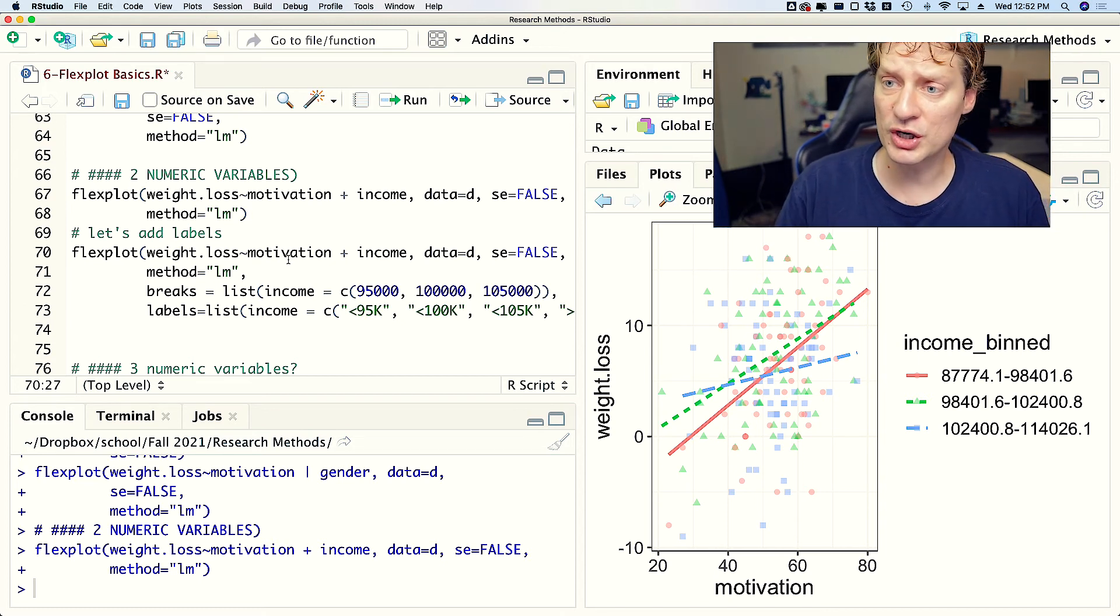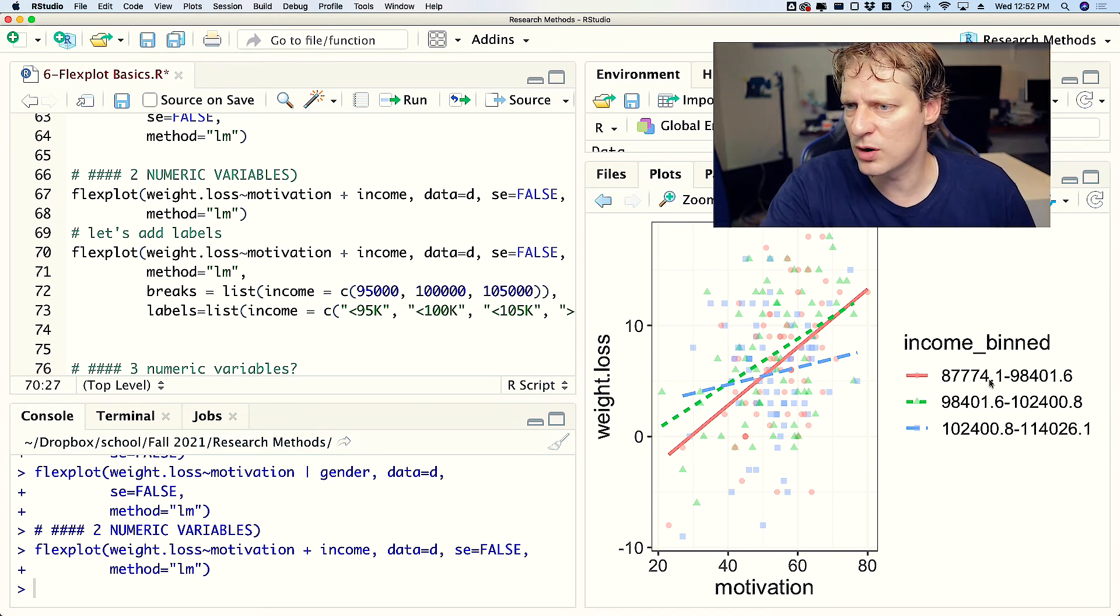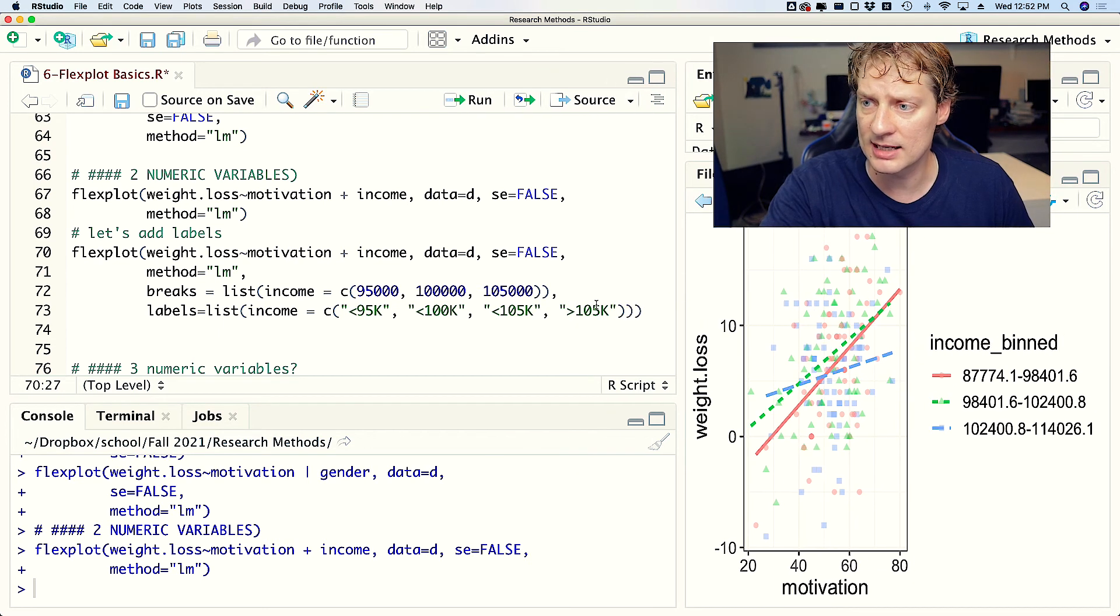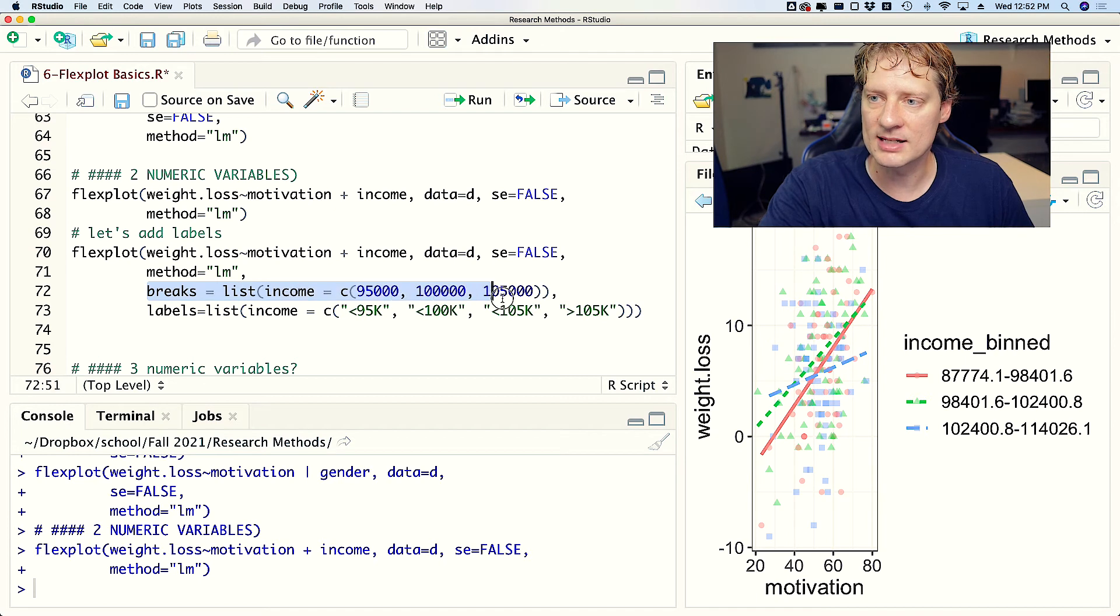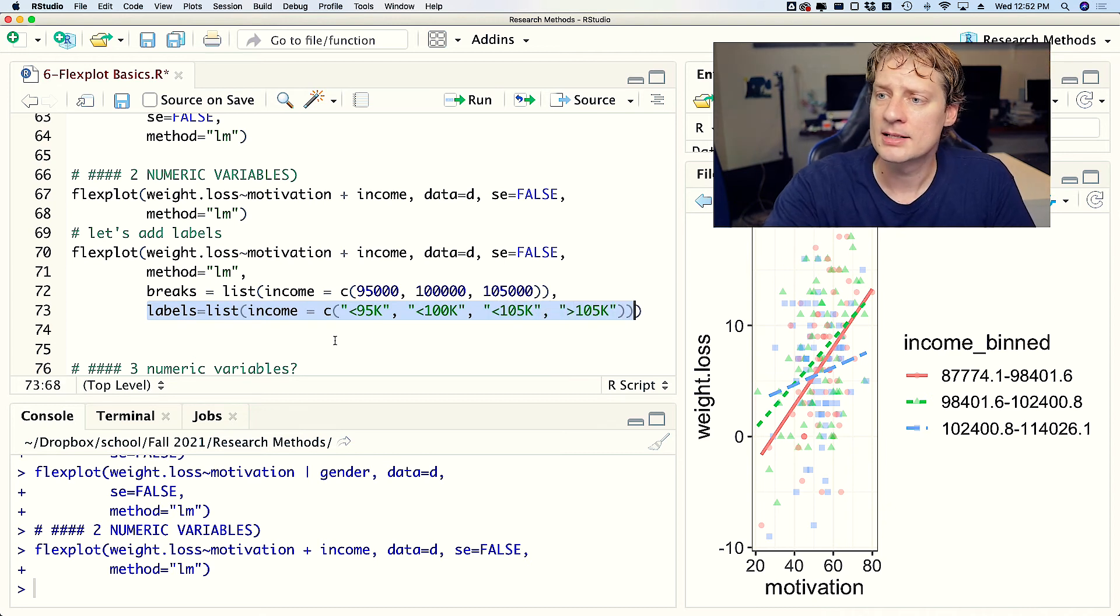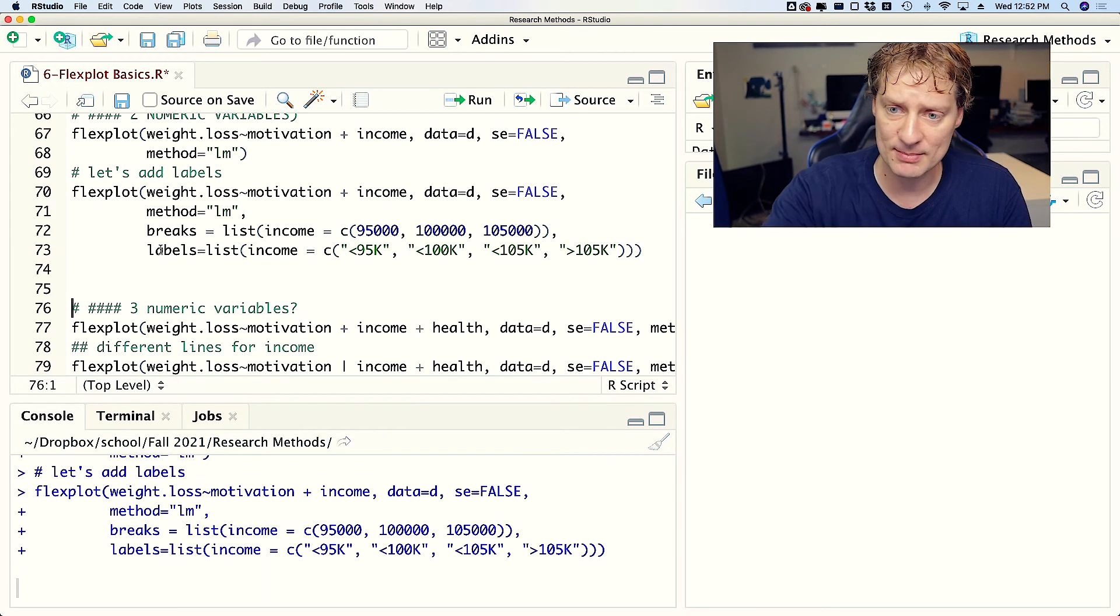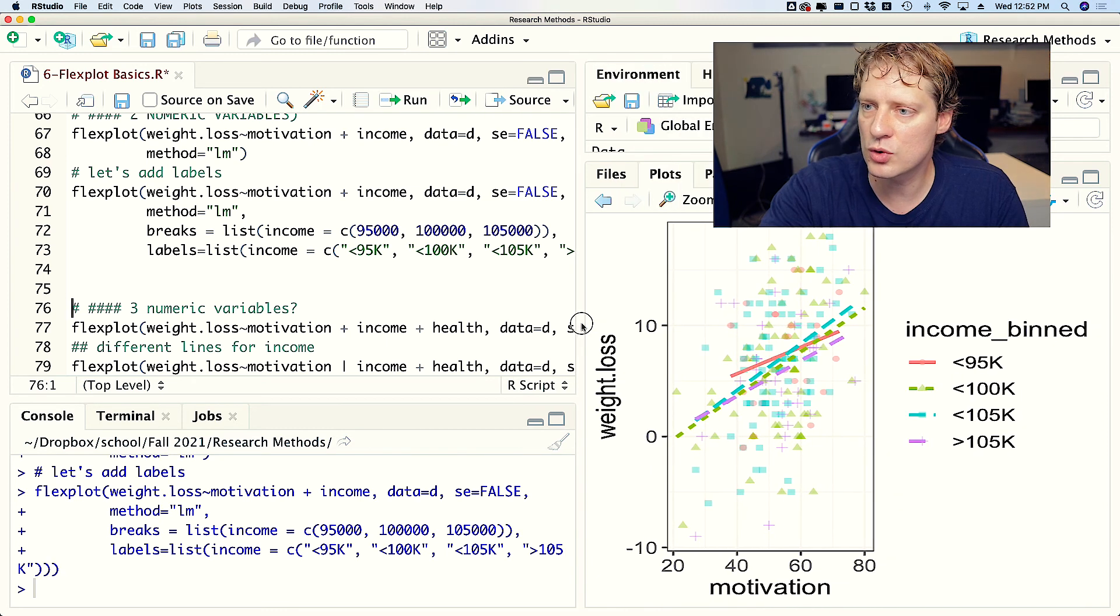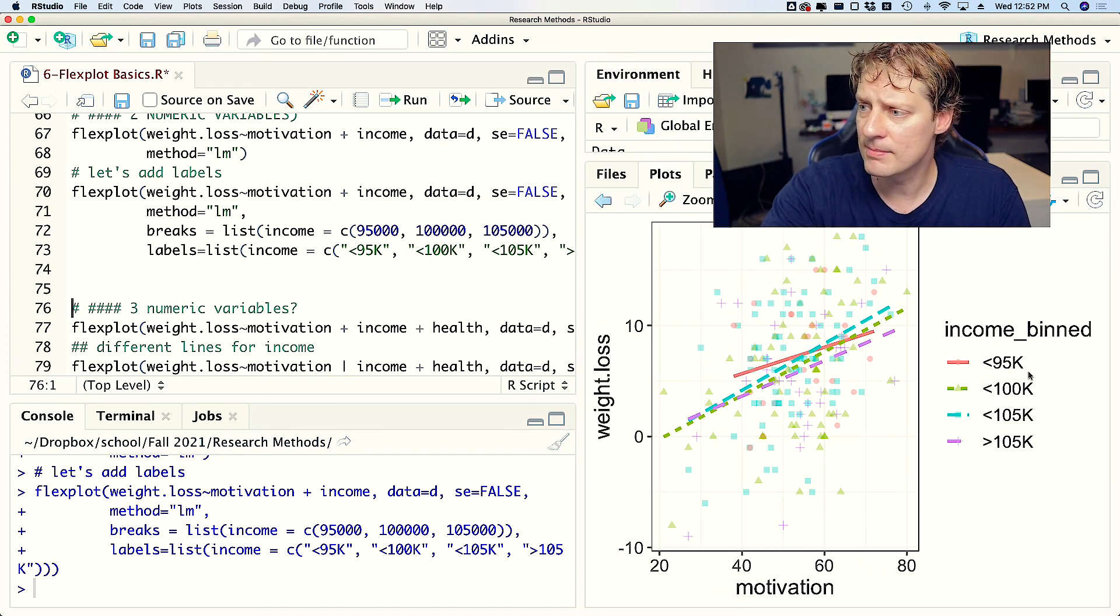Now what you could do is you might say, hey, that's kind of messy, looking at 87774.1. It would be nice if you could put your own custom labels on, and you actually can. That's where this comes in: you say breaks, and this tells you what values to break it at. So basically it's saying I want anyone with less than 95,000, and then between 95,000 and 100,000, then between 100,000 and 105,000, and then above that. And then you could also specify a labels argument to tell R what exactly to label those things. And so if I were to run that bit of code, we would see something that is far more clean to look at.